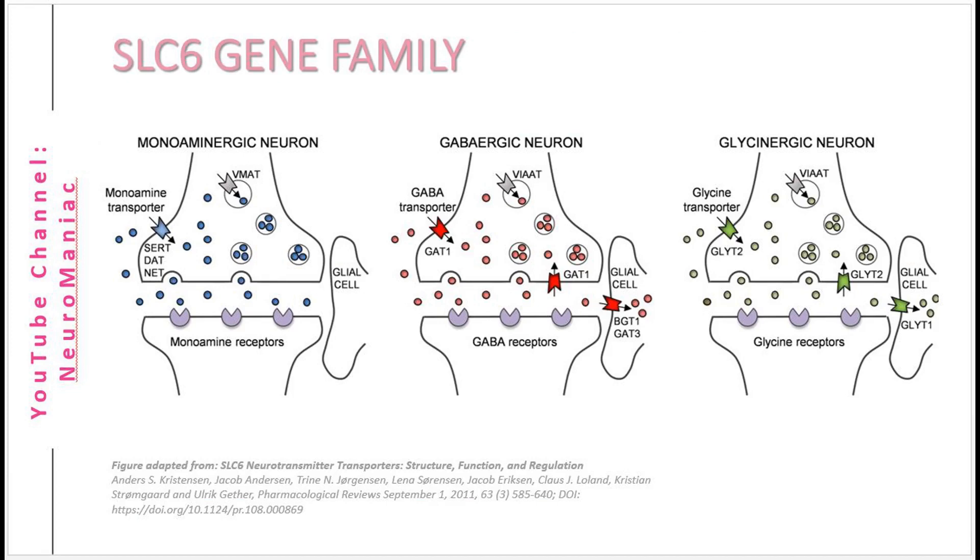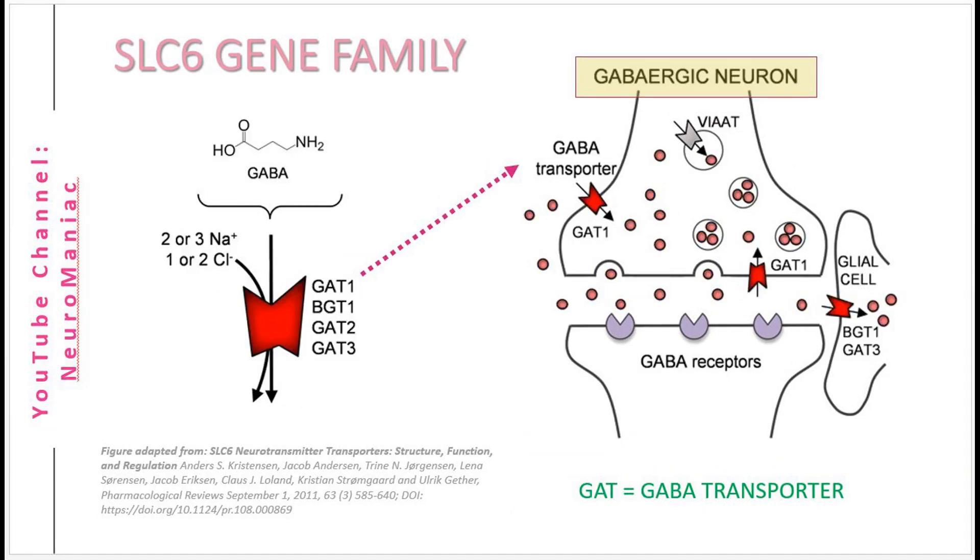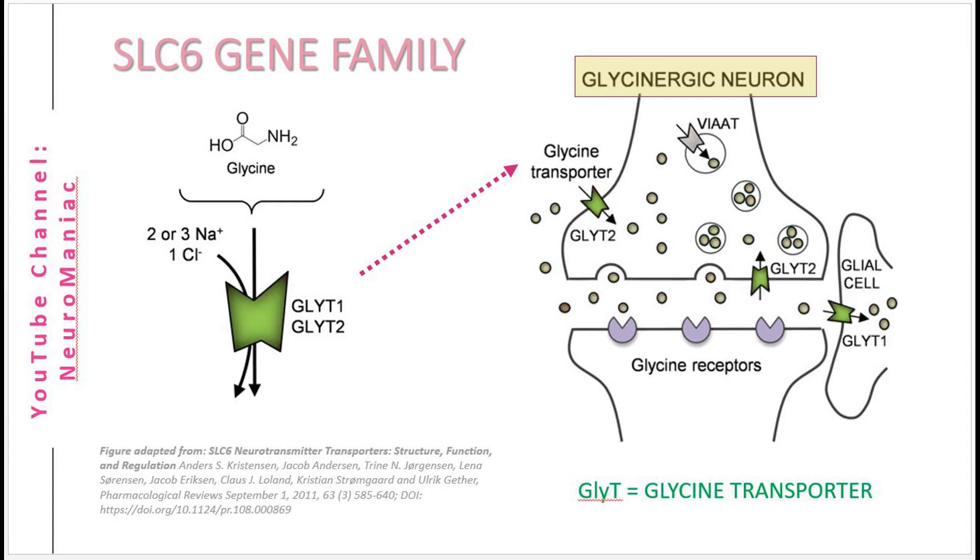The SLC6 gene family involves the reuptake of monoamines, serotonin, noradrenaline and dopamine via the respective presynaptic transporters. Apart from the monoamines, SLC6 also includes the GABA transporter GAT, and the glycine transporter GLY-T.